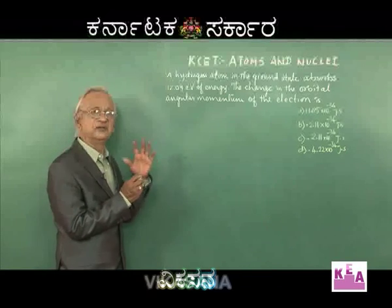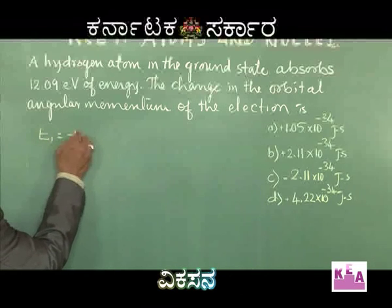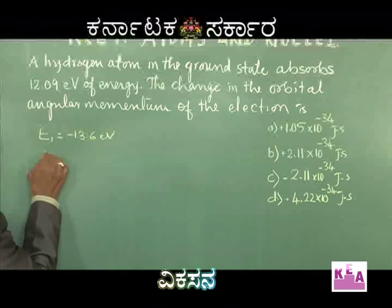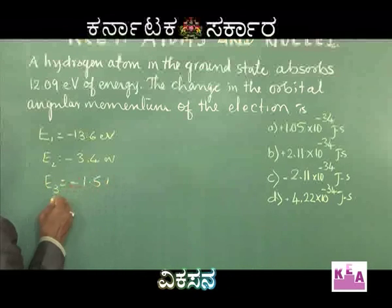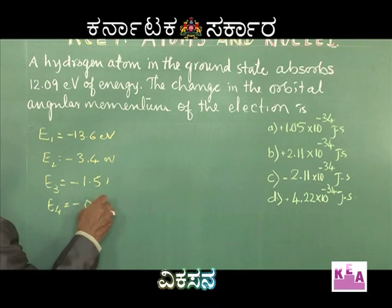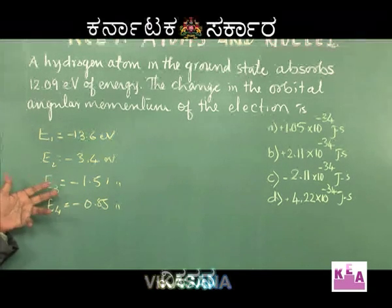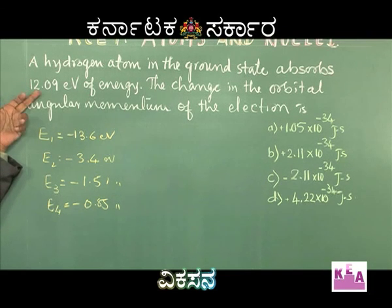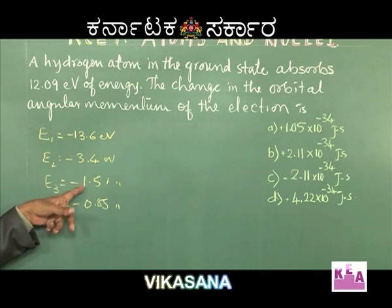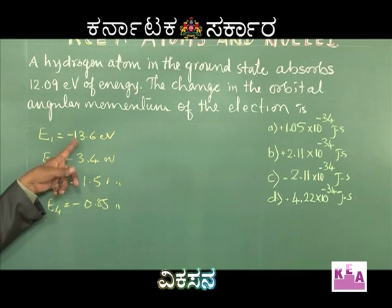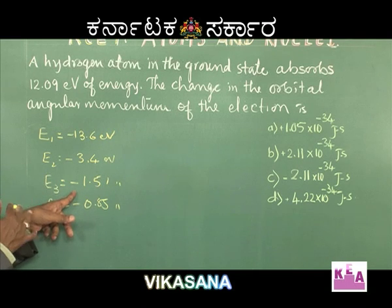The energy levels of hydrogen are: E₁ = −13.6 eV, E₂ = −3.4 eV, E₃ = −1.51 eV, E₄ = −0.85 eV. On absorbing 12.09 eV, the atom transitions from the ground state. Considering E₃ − E₁: −1.51 − (−13.6) = 12.09 eV. So the transition takes place from n = 1 to n = 3.